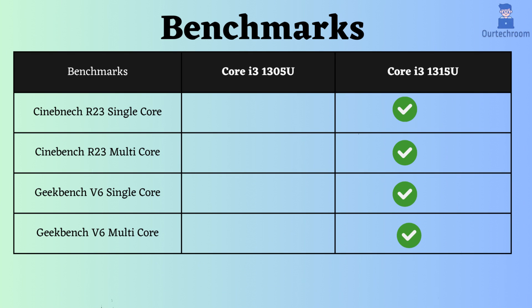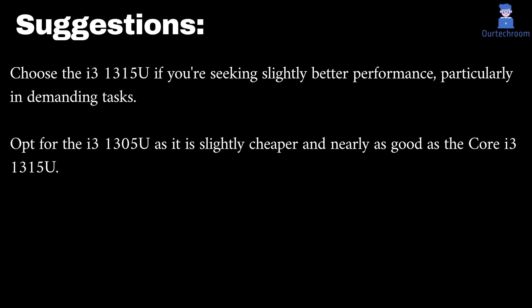Looking at benchmark comparisons — according to Cinebench R23 single-core and multi-core, and Geekbench V6 single-core and multi-core — the Core i3-1315U is slightly better. Choose the i3-1315U if you're seeking slightly better performance, particularly in demanding tasks. Choose the i3-1305U as it is slightly cheaper and nearly as good as the Core i3-1315U.